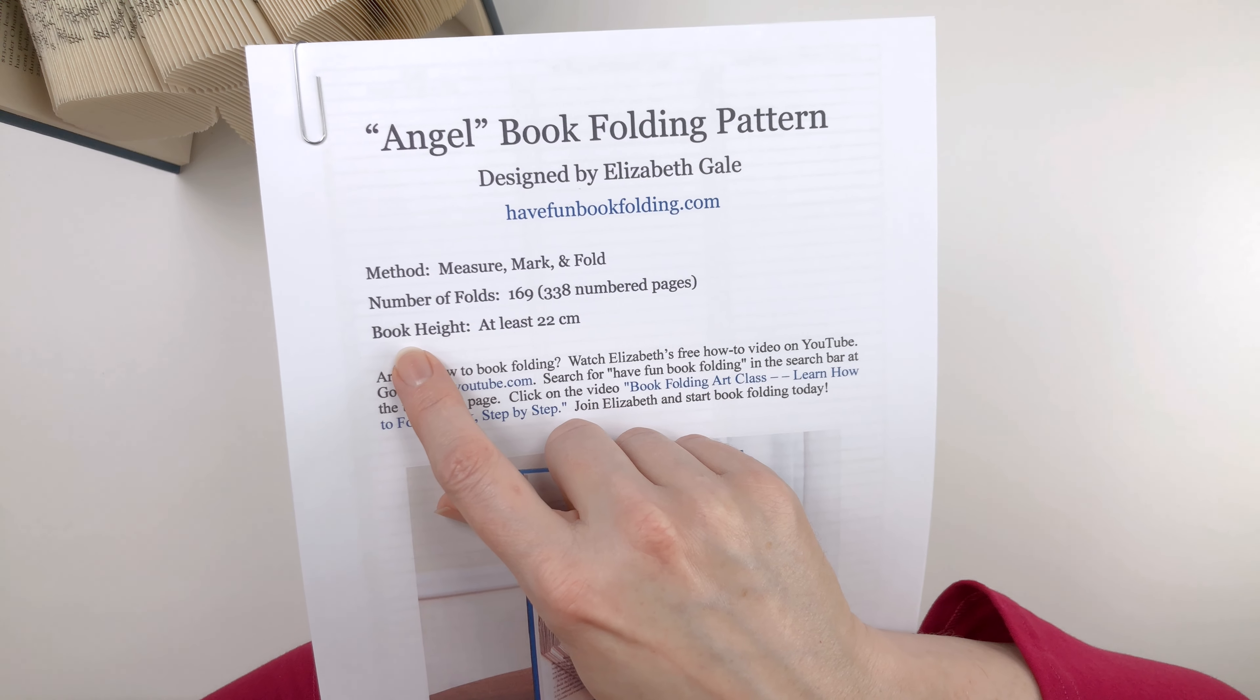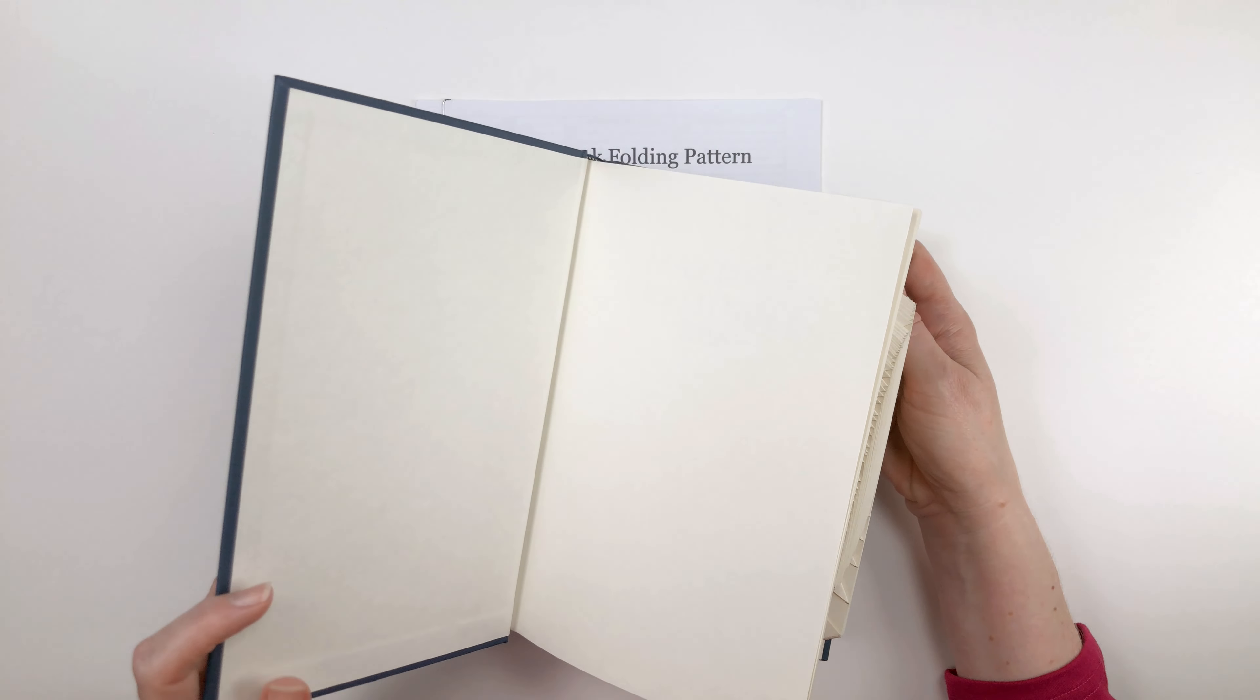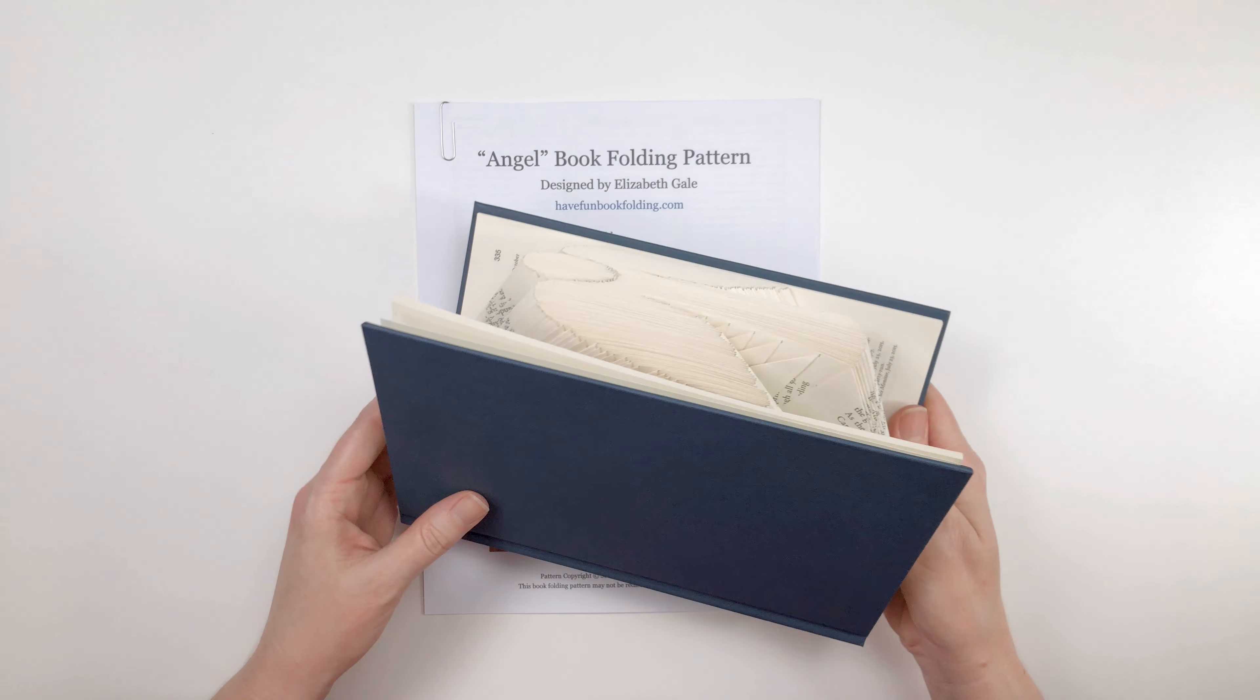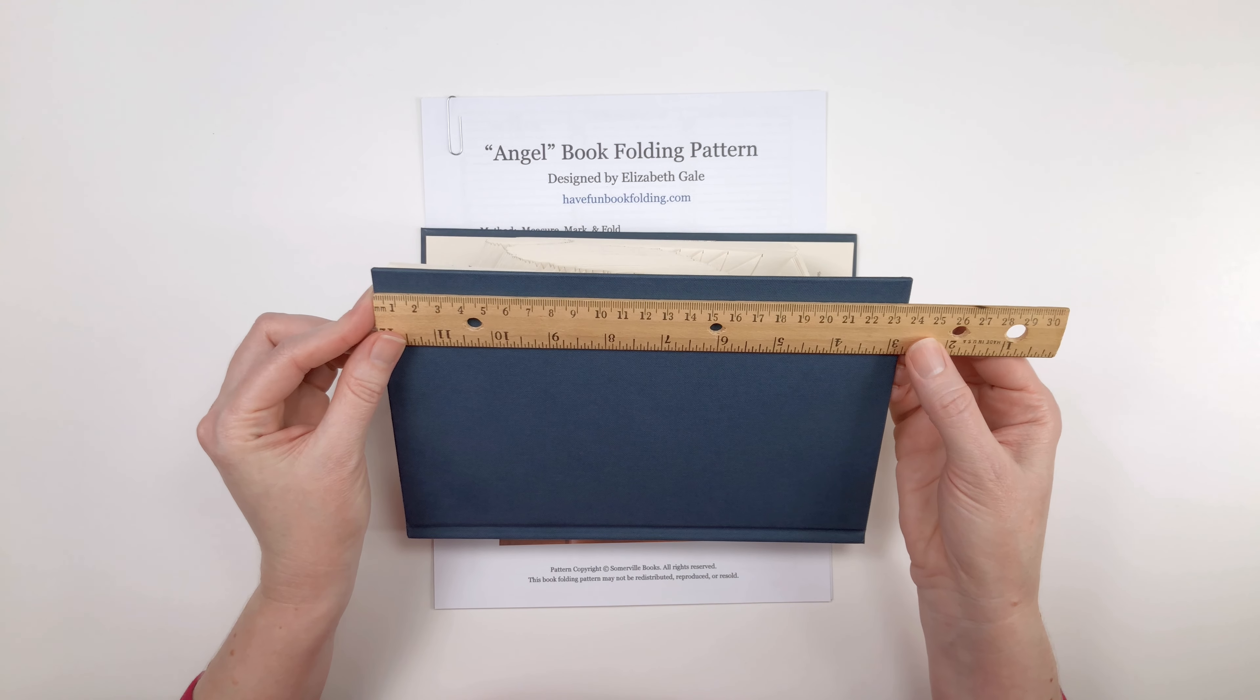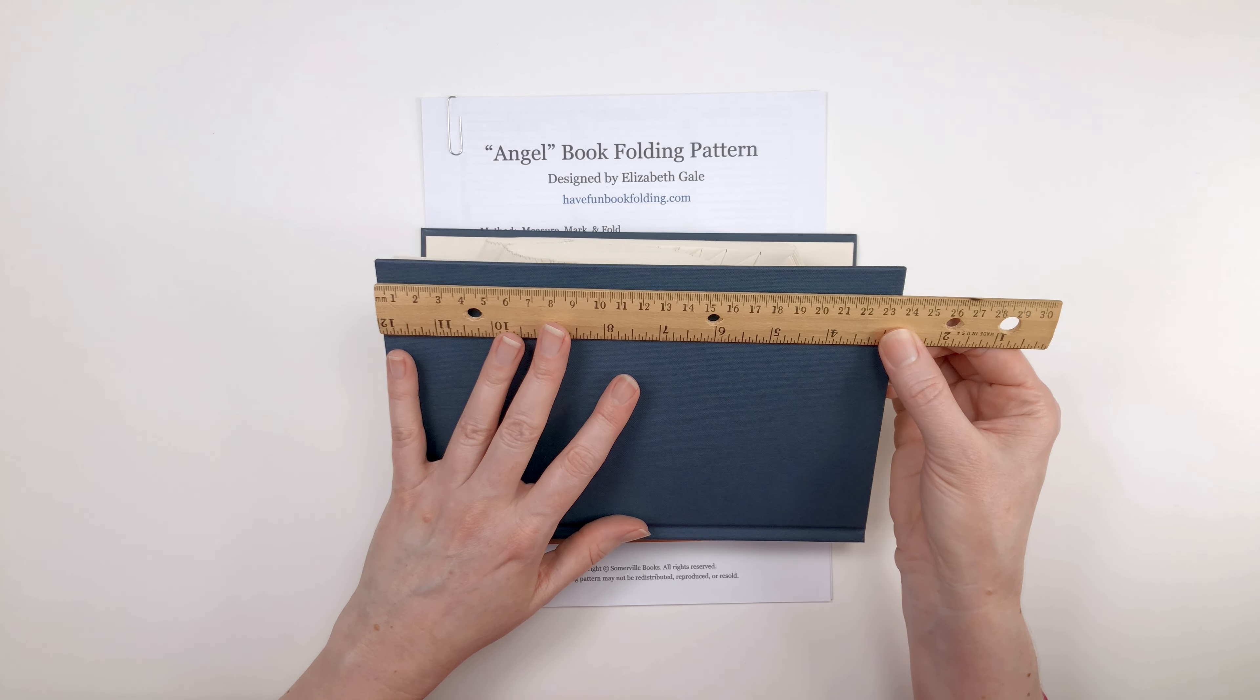If we look at the next line, you'll see the height of the book you'll need is at least 22 centimeters. And when I say 22 centimeters, I'm talking about the cover of the book, not the pages inside. A book's pages are always shorter than its covers. You can use a book that's taller than 22 centimeters. This book that I folded is about 23 and a half centimeters. So if your book is over 22 centimeters tall, that's fine. The angel design will still look good.